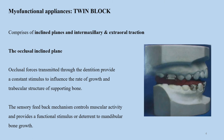How does the inclined plane work? The occlusive forces are transmitted through the dentition, and these forces provide a constant stimulus to influence the rate of growth and the trabecular structure of the supporting bone. The sensory feedback which controls muscular activity provides a functional stimulus, or it can provide a deterrent to mandibular bone growth. This is how the twin block helps through the use of inclined planes and intermaxillary and extraoral traction.